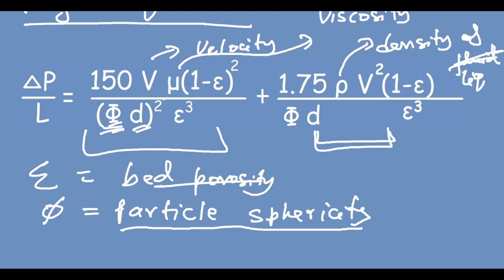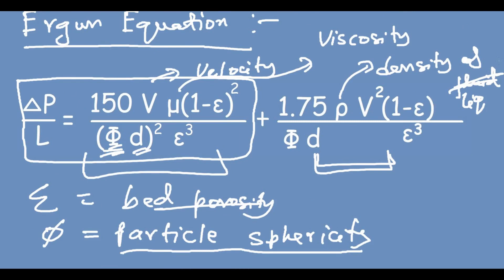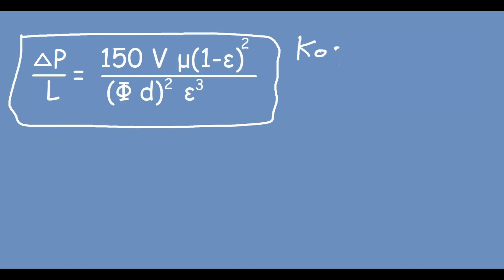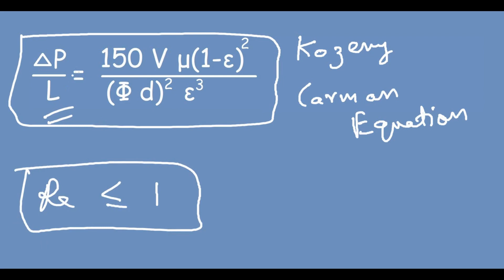The first term of the Ergun equation is known as the Kozeny-Karman equation. This equation is applicable when the particle Reynolds number is up to one — that is, Re ≤ 1. In that case, I can use the Kozeny-Karman equation to find the pressure drop in the packed bed.